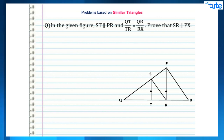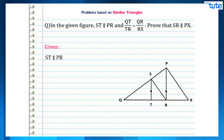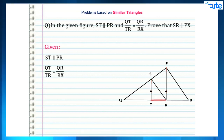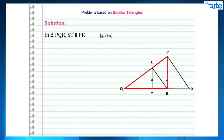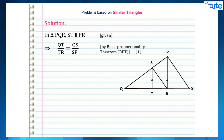The first question says: in the given figure, ST is parallel to PR, and QT/TR = QR/RX. Prove that SR is parallel to PX. In this question we are given two things — first, ST is parallel to PR, and second, QT/TR = QR/RX — and we have been asked to prove that SR is parallel to PX. In order to prove this, we will consider triangle PQR.